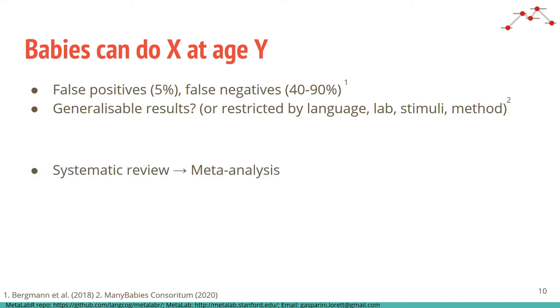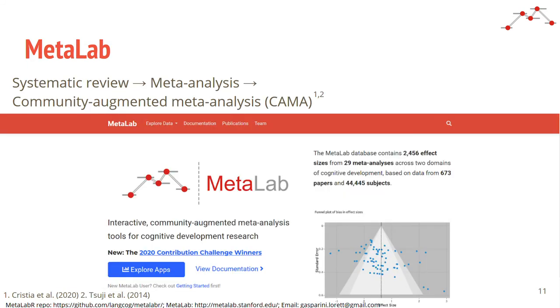Systematic reviews and meta-analyses help bring coherence to a complex evidence base and improve our confidence in results. But meta-analyses are underused in developmental research. To assist developmental researchers in conducting and accessing meta-analyses, my colleagues created MetaLab, a platform for open dynamic meta-analytic datasets.